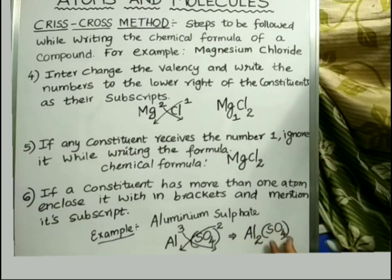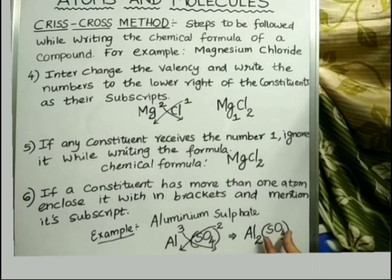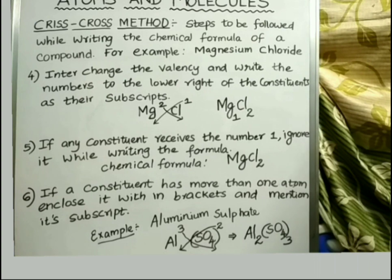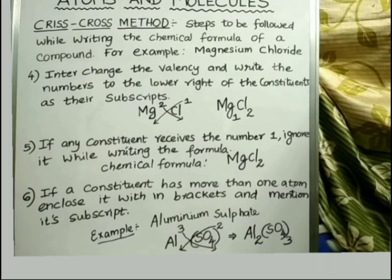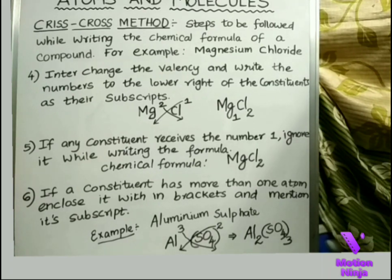This is the example for Step 6, in which more than one atom is present in the constituent cation or anion, and therefore the subscript 3 is applied outside the bracket enclosing SO₄.